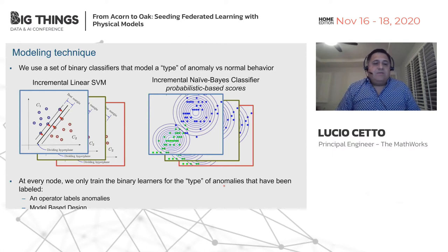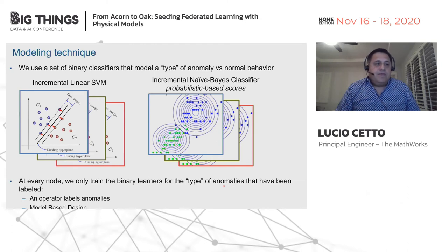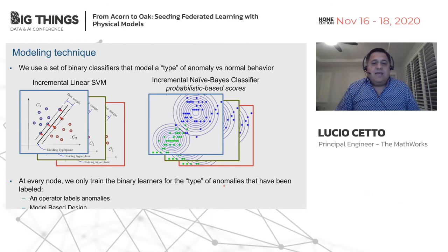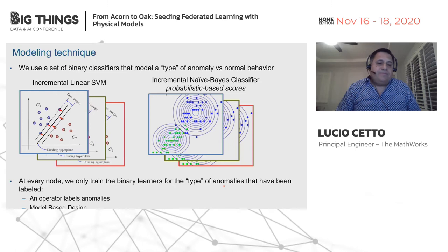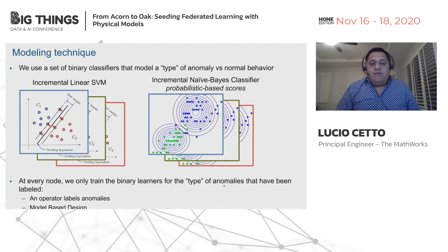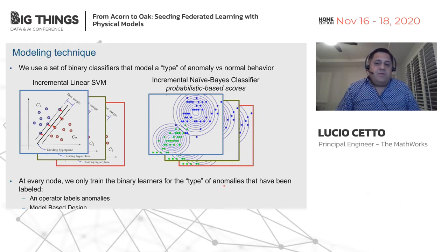Let's make a small note about the labels. We assume labels are provided in one of two ways. In the first case, an operator at a given factory might label the anomalies after experiencing them, retrofitting the information to the stream. In the second case, an engineering team starting operation of the system may use a physical computer model that generates the data and the labels.